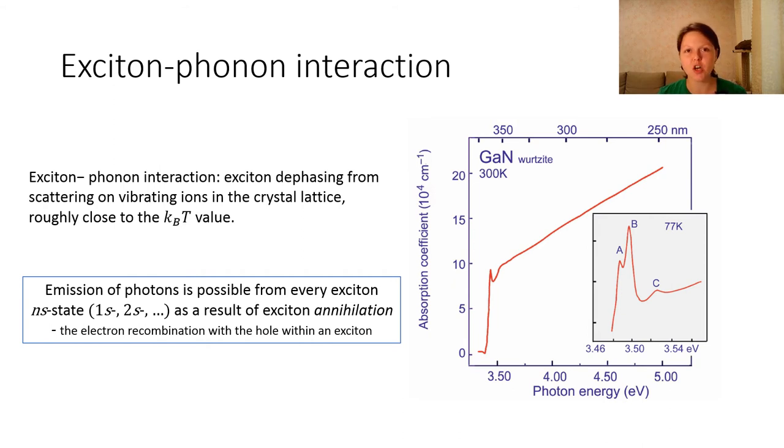Emission of photons is possible from every exciton n-state as a result of exciton annihilation, which is the electron recombination with a hole within an exciton.